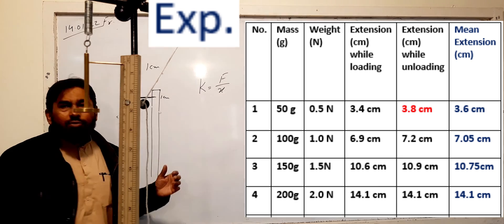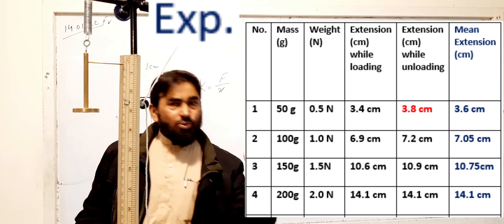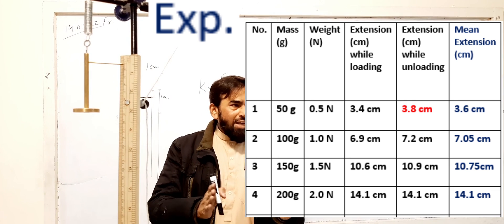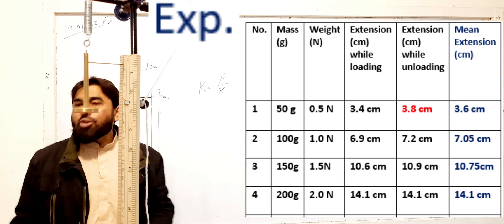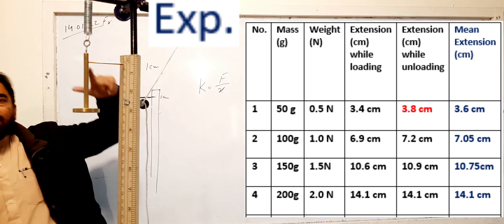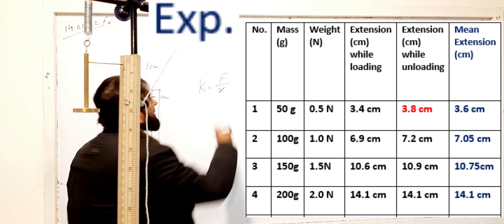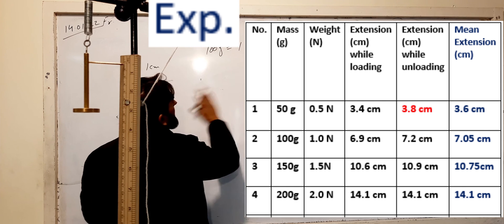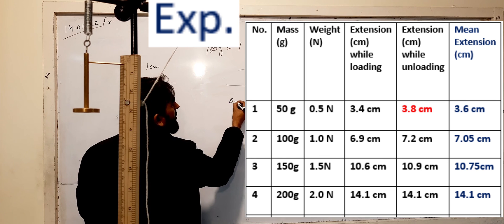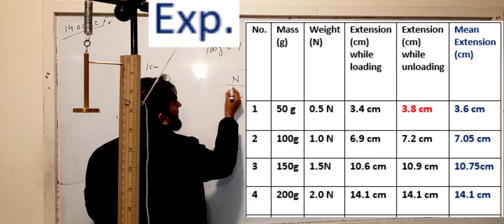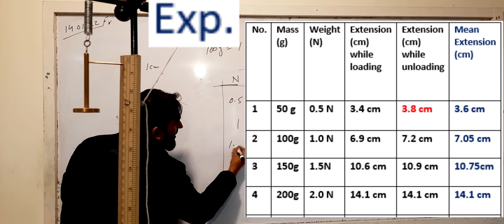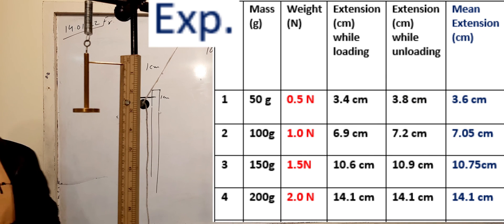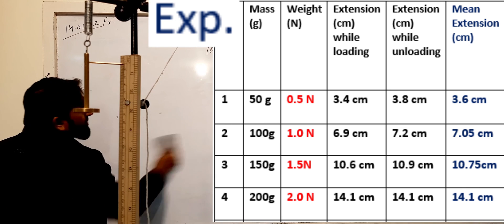We use g = 10 N/kg for simpler calculations, although 9.8 N/kg is also acceptable. Based on this, 100 grams equals 1 newton, so 50 grams equals 0.5 newton. Therefore, the loads in newtons are: 0.5 N, 1 N, 1.5 N, and 2 N for the respective masses. You can now plot a graph between load and extension to determine the spring constant K.